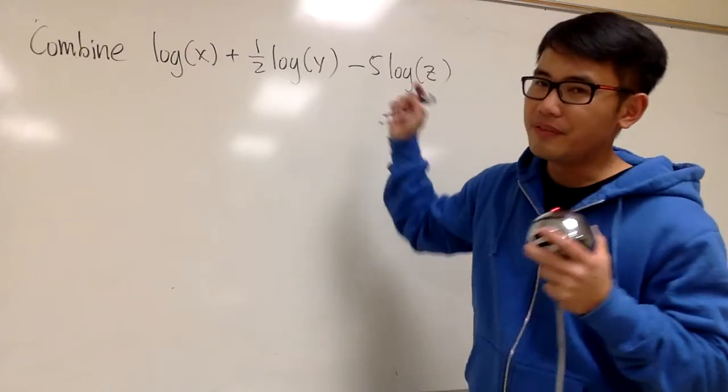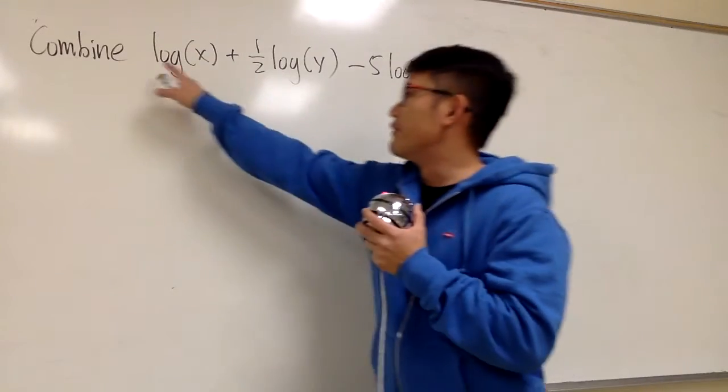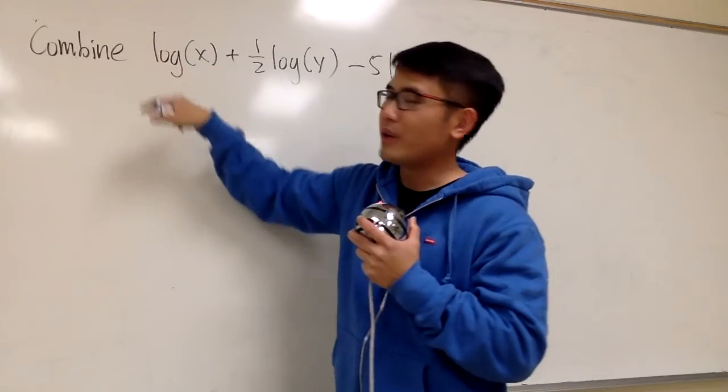Here's the thing we have to do first. Look at the number in front of the logs. If there's any numbers, bring them to the exponent. The first one's good because we'll just have a 1 right here technically.